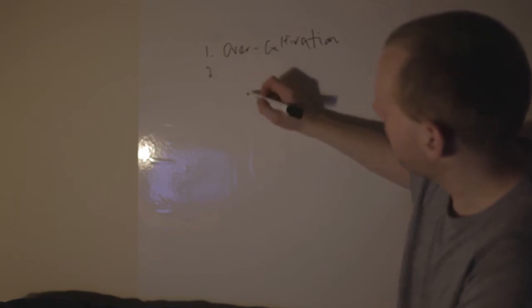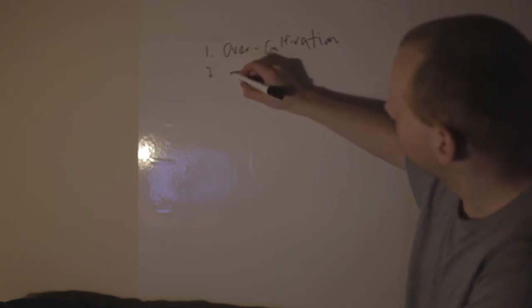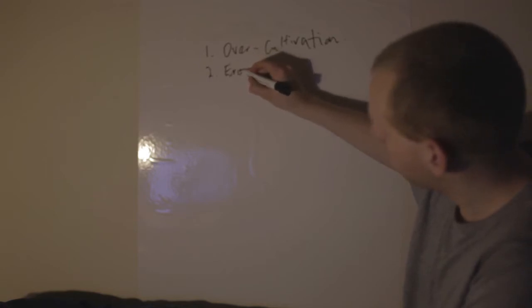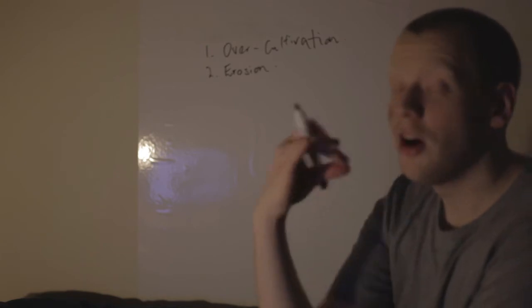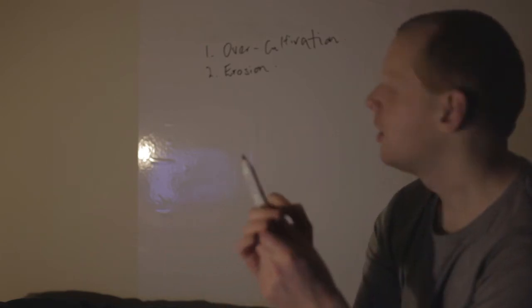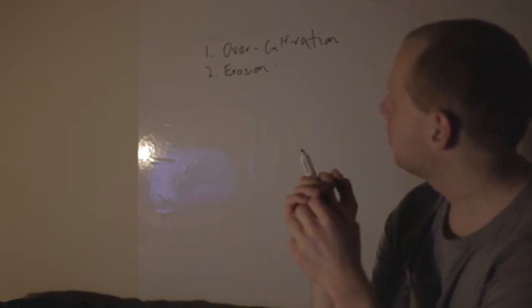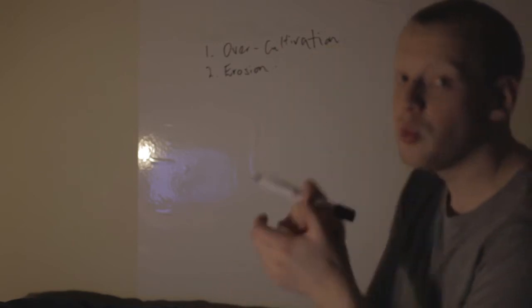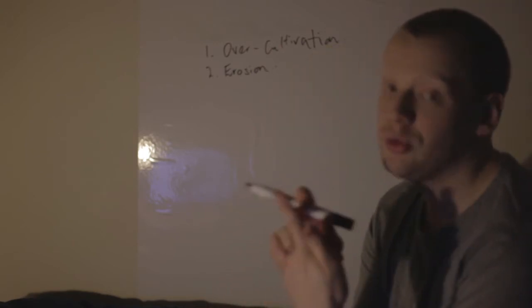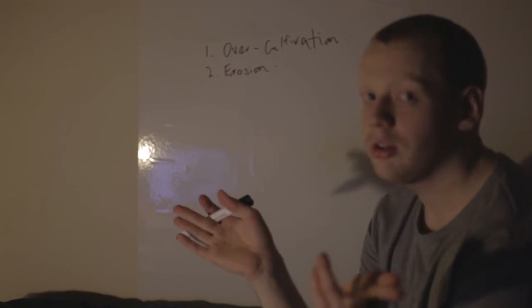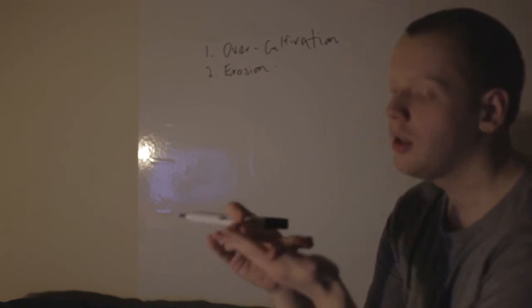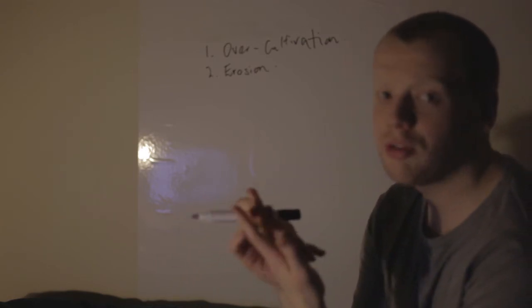The second one is basically erosion. So erosion is another soil threat. And erosion basically can be in the form of wind erosion, too much water washing soil minerals away, and even UV damage from the sun.